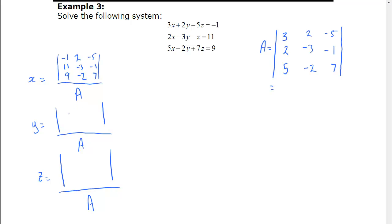In order to find y, we replace the second column. So minus 1, 11, and 9 becomes the second column, and the first one is the coefficient of the x, and the last one stays the coefficient of z. And finally, to find z, we replace the z coefficients with the constants. And the other two columns stay the same, so we have the x coefficients and the y coefficients. So there's x, y, and z.